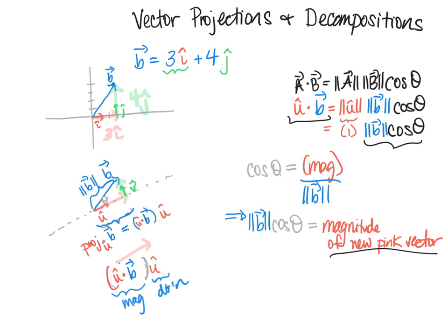We actually have a name for this — we call it the projection of vector b onto vector u: proj_u(b) = (û · b) û. The light green vector is called the orthogonal projection. We don't even need to name v̂ explicitly, because by vector addition the light pink plus the light green equals the blue vector b, so the orthogonal projection is b minus the projection: b − proj_u(b).